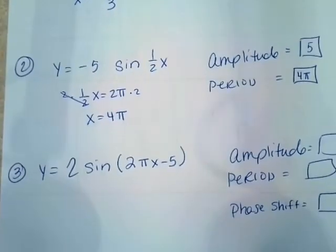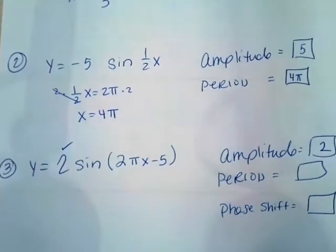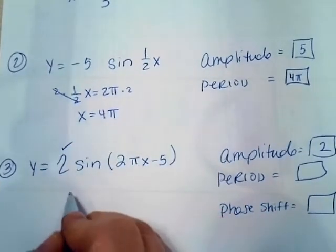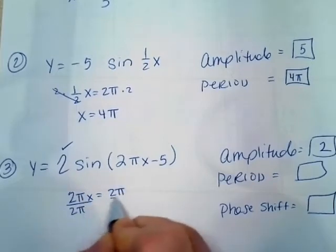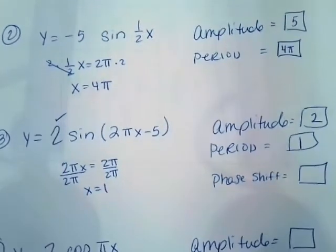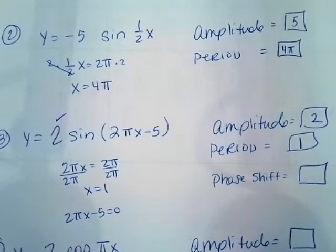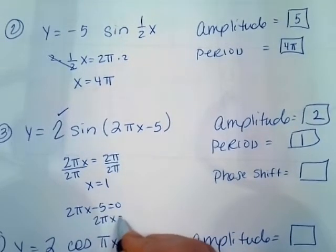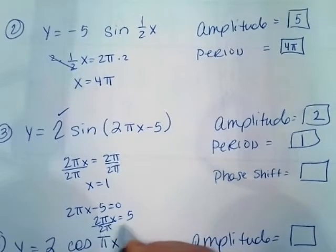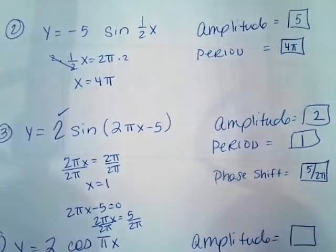Number 3, the amplitude is 2 from right there. The period, we're going to take this 2π x, set it equal to 2π, solve for x, x is 1. The phase shift is where you take 2π x minus 5 and set it equal to 0. So I'm going to add 5 to both sides. So it's going to be 2π x equals 5. Divide by 2π. It's 5 over 2π for a phase shift.